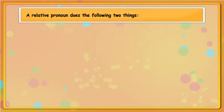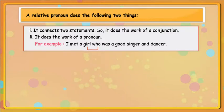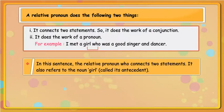A relative pronoun does the following two things. It connects two statements, so it does the work of a conjunction. It also does the work of a pronoun. For example: I met a girl who was a good singer and dancer. In this sentence, the relative pronoun 'who' connects two statements and also refers to the noun 'girl', called its antecedent.